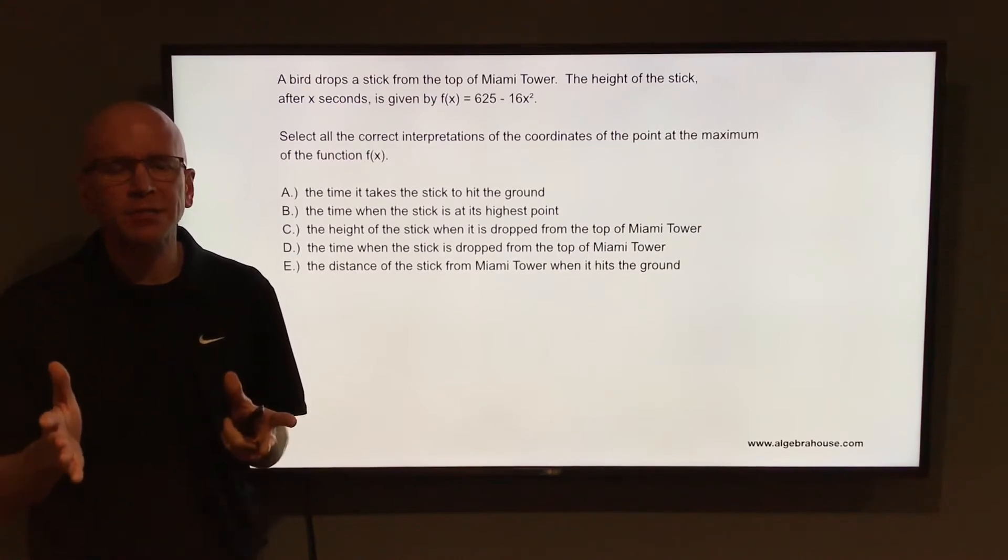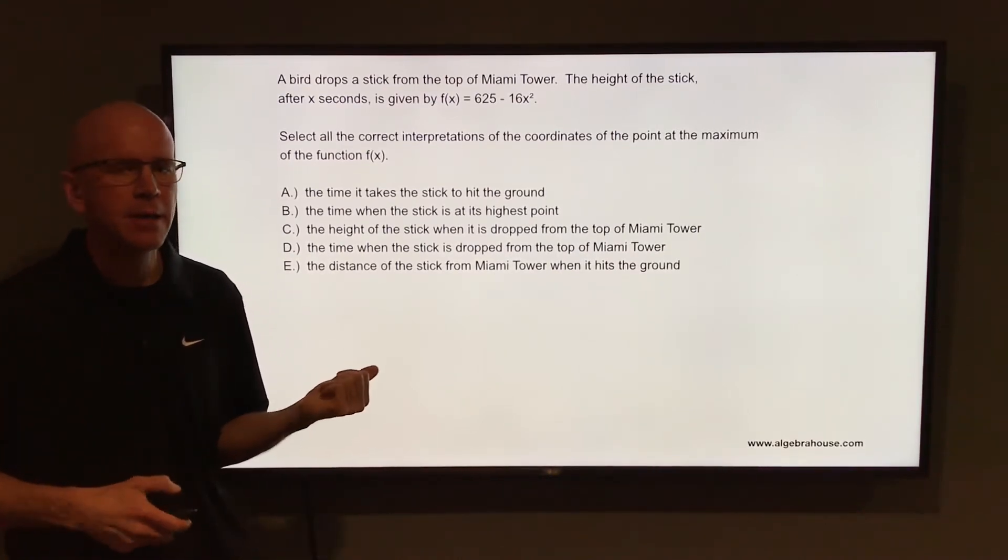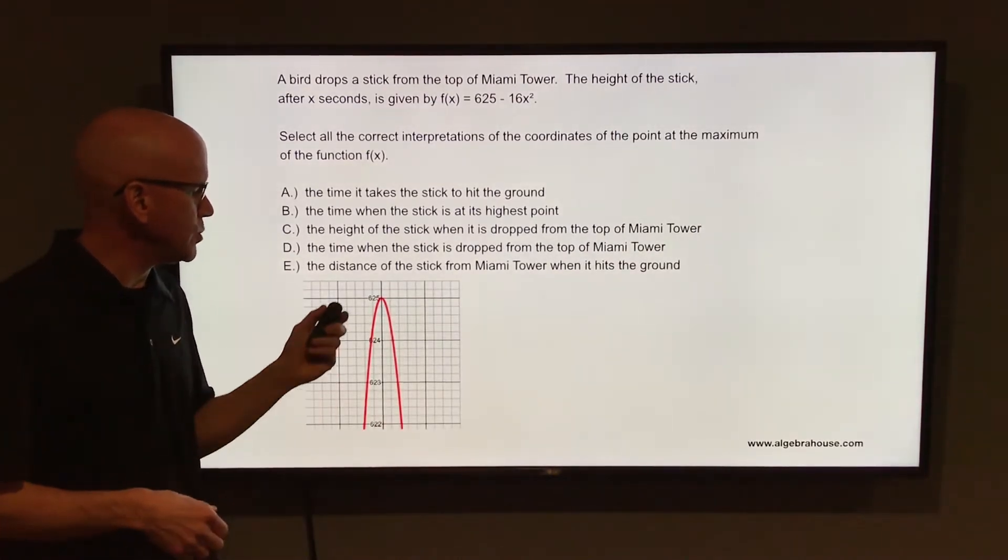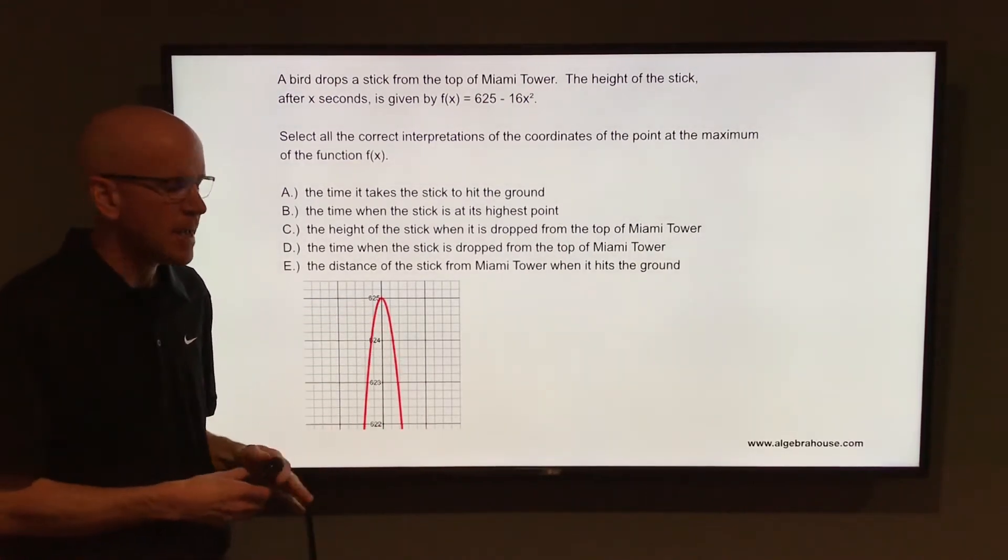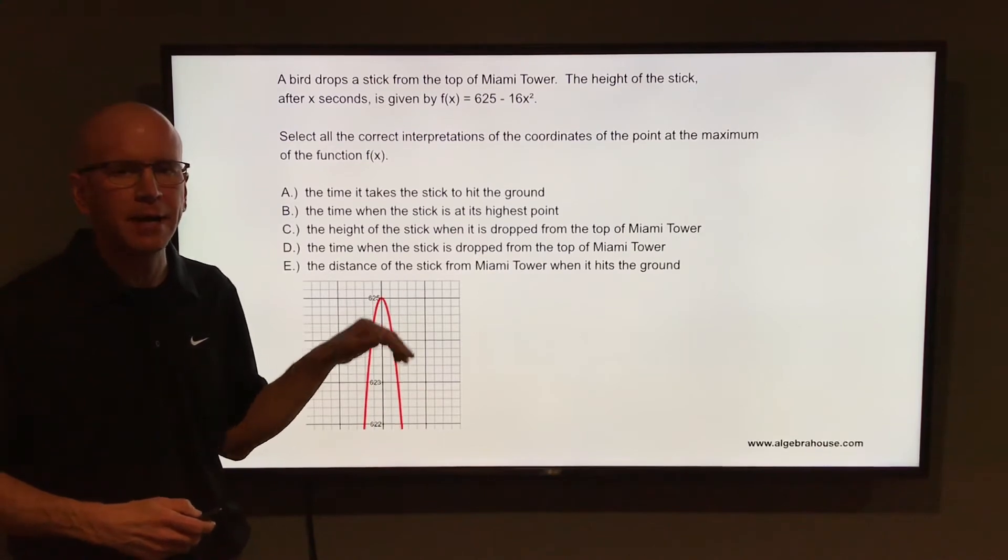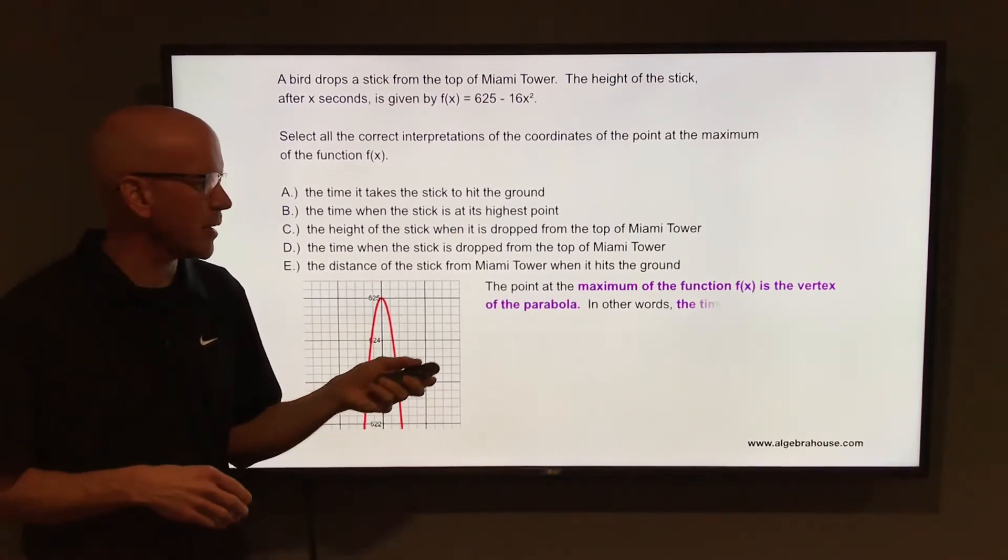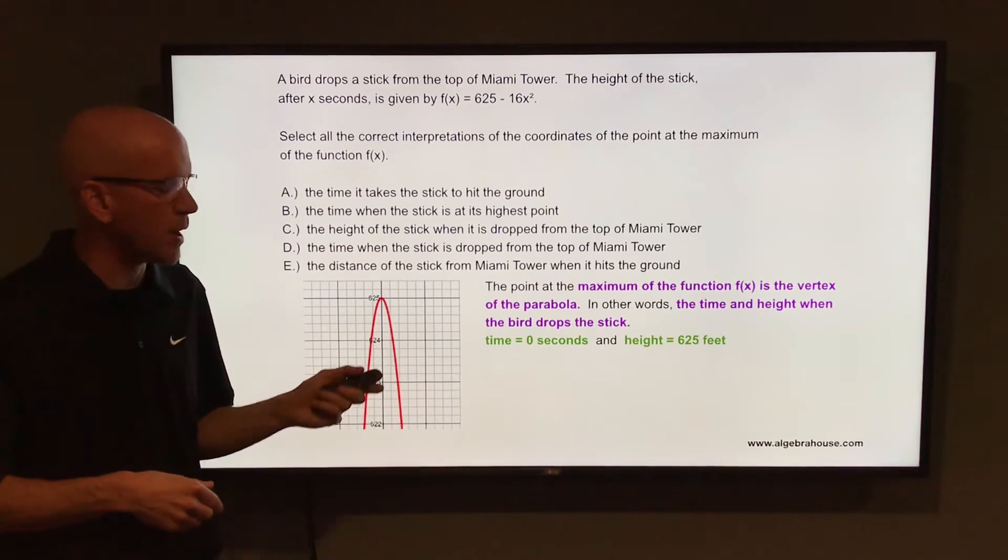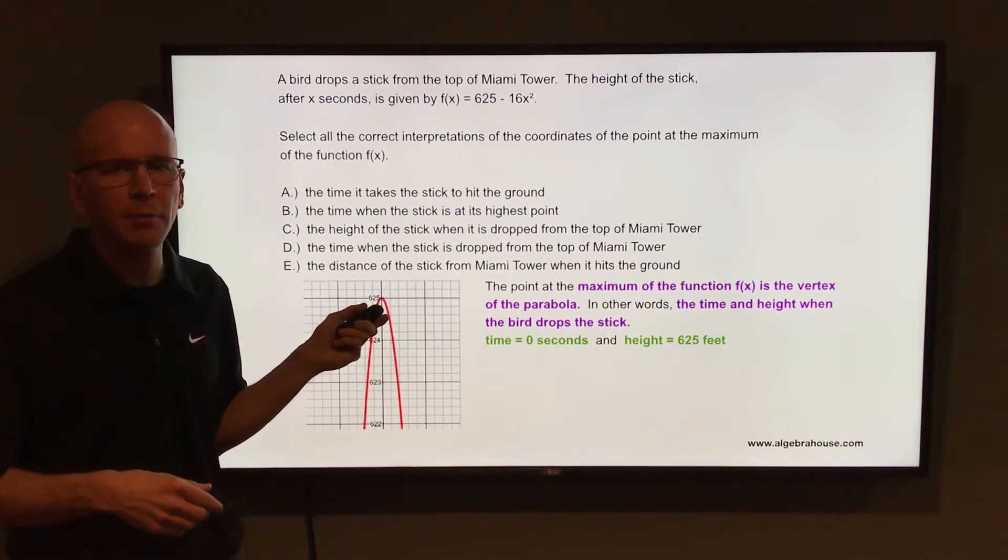So the graph of f(x) equals 625 minus 16x squared is in the shape of a parabola. It's a u-shaped graph opening downward. The x-axis represents the time, the y-axis represents the height. So the point at the maximum of the function f(x) is the vertex of the parabola or the turning point on that parabola, the highest point that that parabola reaches.